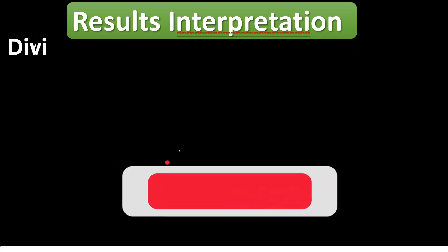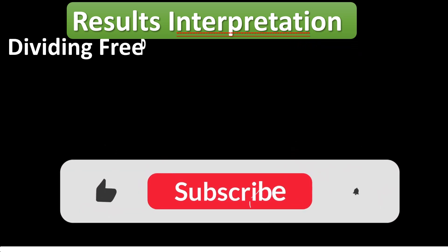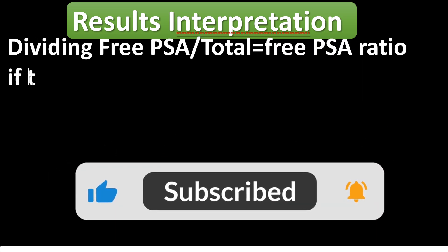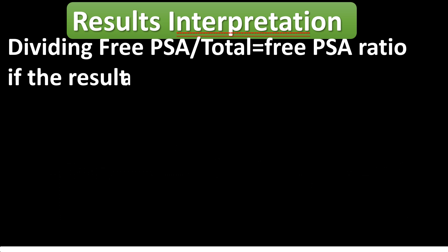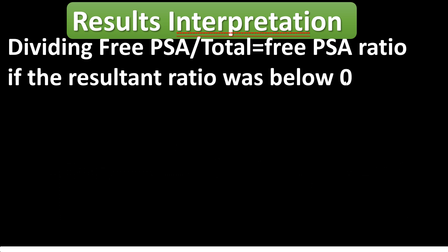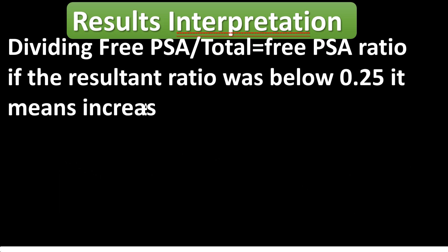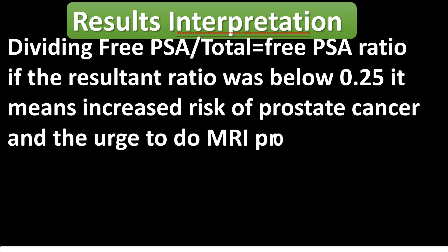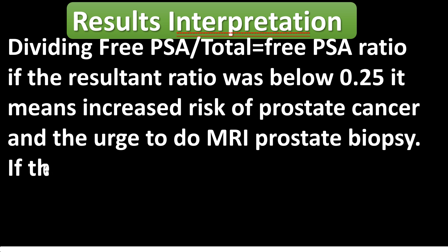Results interpretation: dividing free PSA by total PSA equals the free PSA ratio. If the resultant ratio is below 0.25, it means increased risk of prostate cancer, and there is an urge to do an MRI or prostate biopsy.